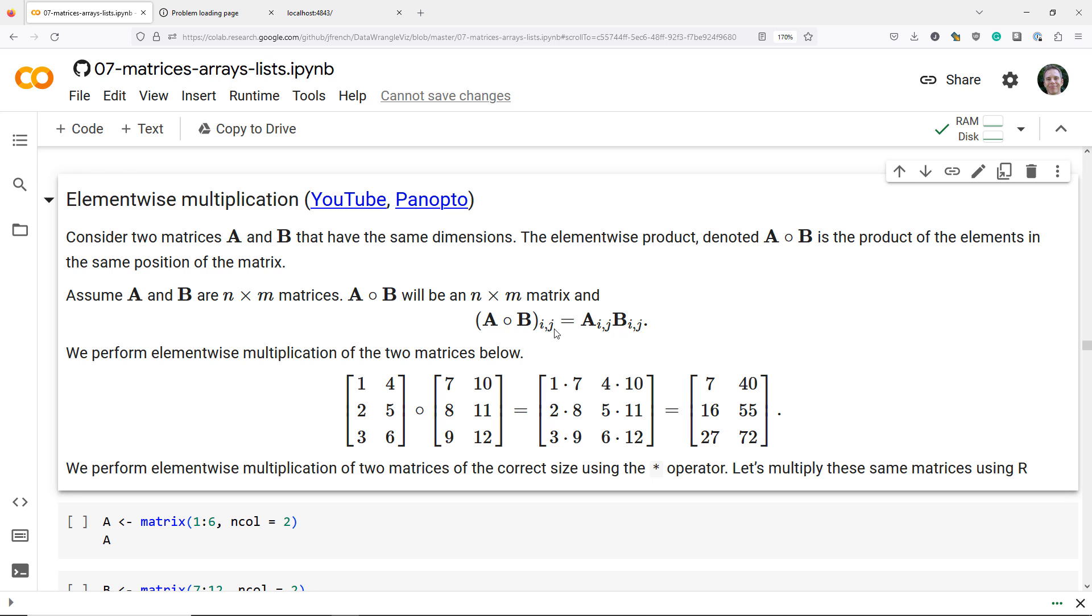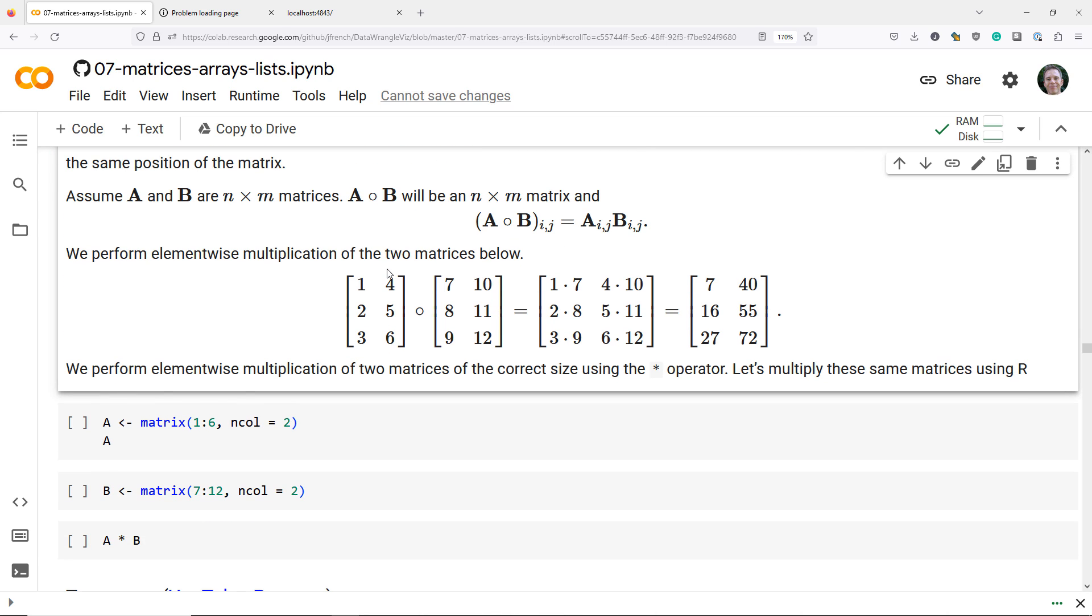And the I,J element of the element-wise product of A and B is simply the product of the element in position I,J of A times the element in position I,J of B. So that's the formula for doing it, but this is really easy to see visually.